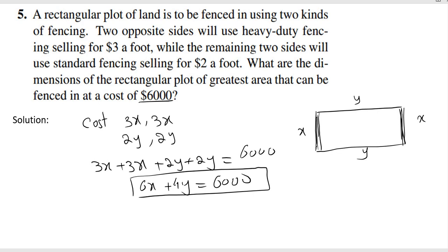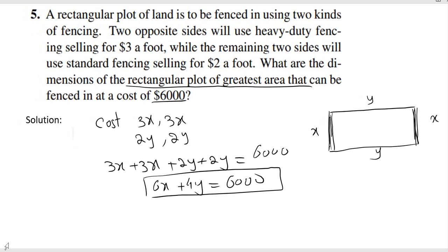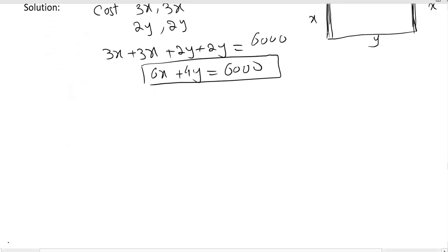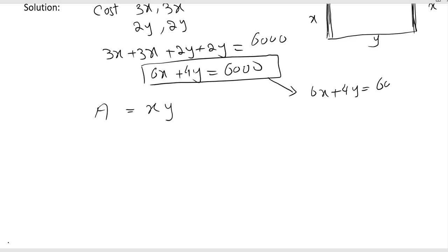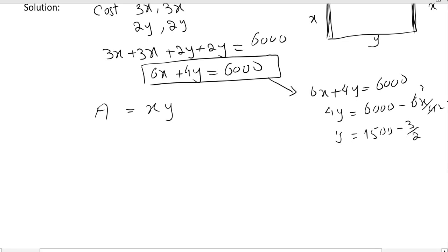Now the question asks: what are the dimensions of the rectangular plot of greatest area? We want to maximize the area. From the cost constraint, we solve for y: dividing by 4 gives y equals 1500 minus 3 over 2 times x.